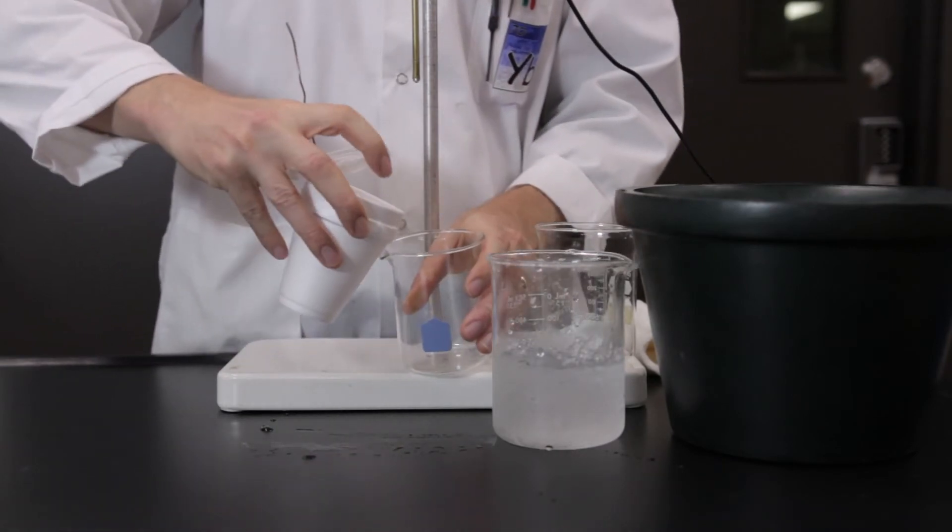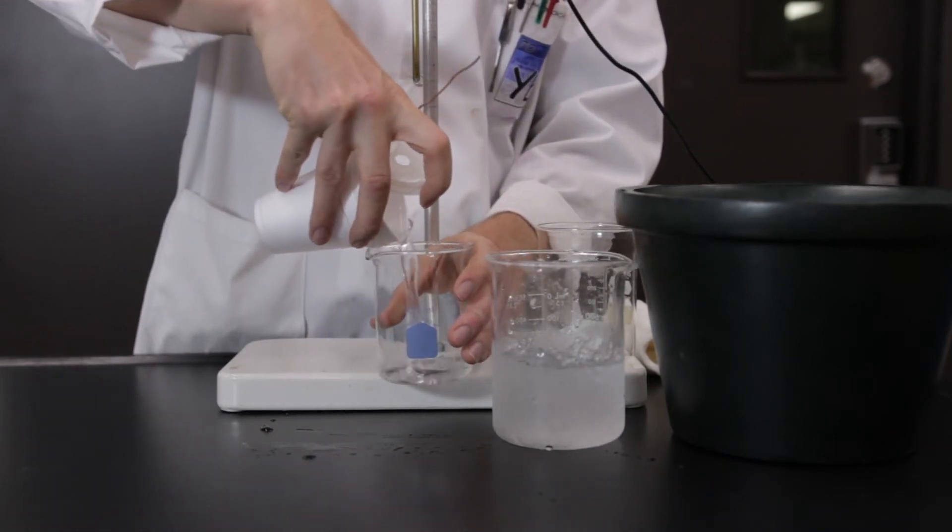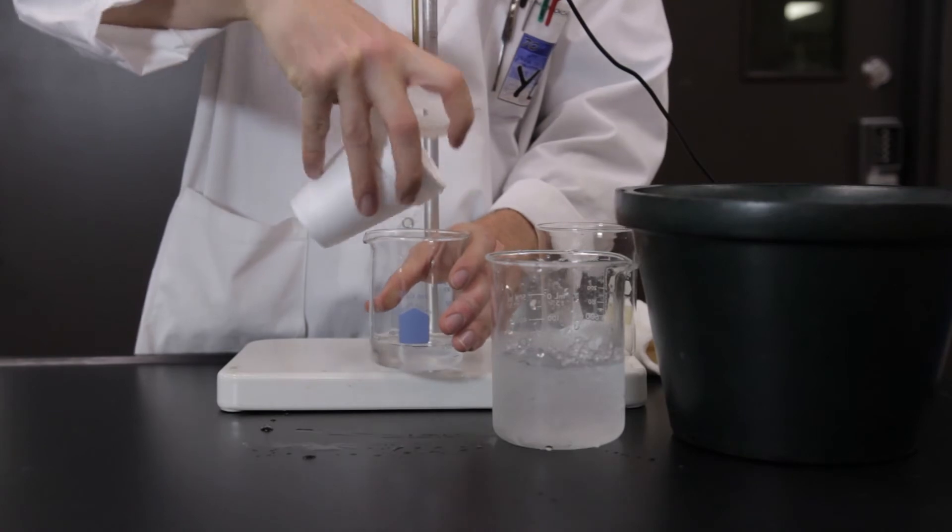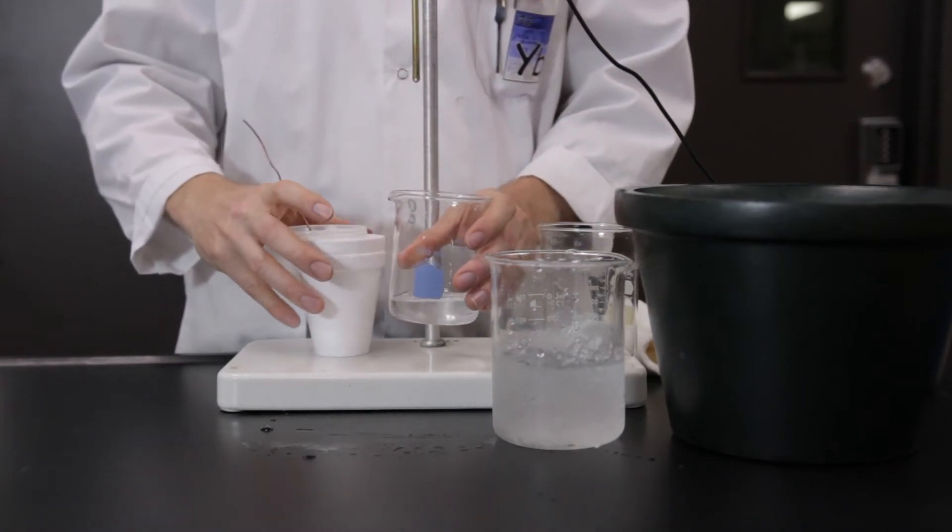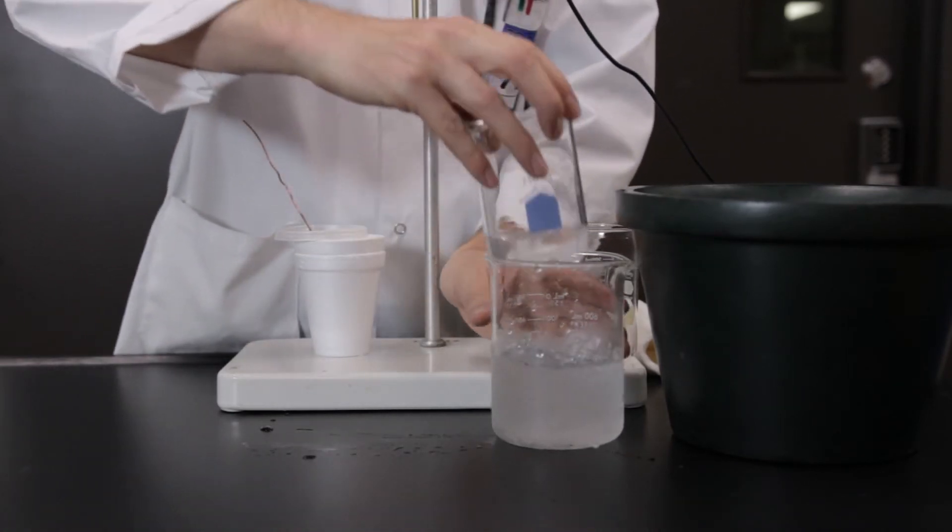Transfer the contents of the calorimeter to a clean, dry, 250 milliliter beaker and immerse the beaker in an ice bath to cool the solution back to the original water temperature.